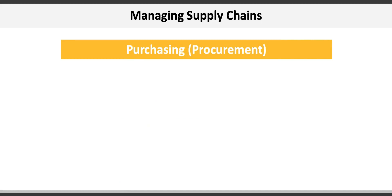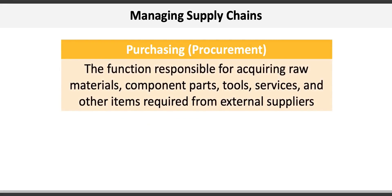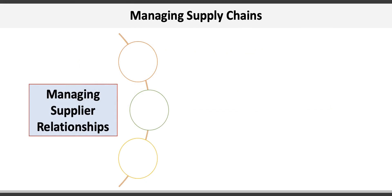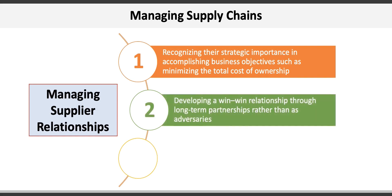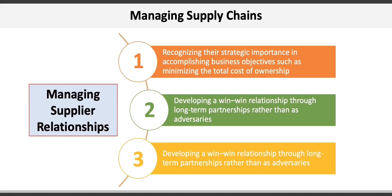Inherent in supply chain management is purchasing, or procurement, which is the function responsible for acquiring raw materials, component parts, tools, services, and other items from external suppliers. Managing relationships with those external suppliers is very important. There are three general principles: first, recognizing their strategic importance in accomplishing business objectives such as minimizing total cost of ownership; second, developing win-win relationships through long-term partnerships rather than treating suppliers as adversaries; and third, establishing trust through openness and honesty, leading to mutual advantages.